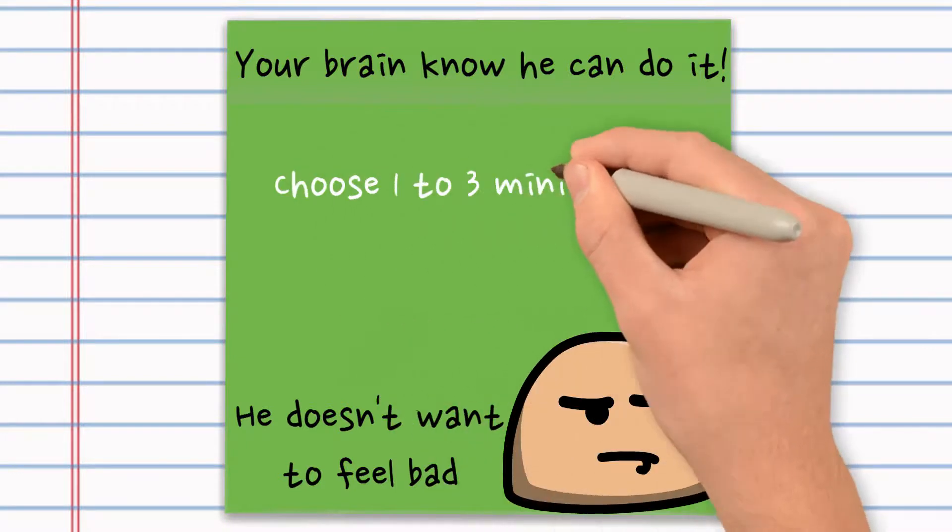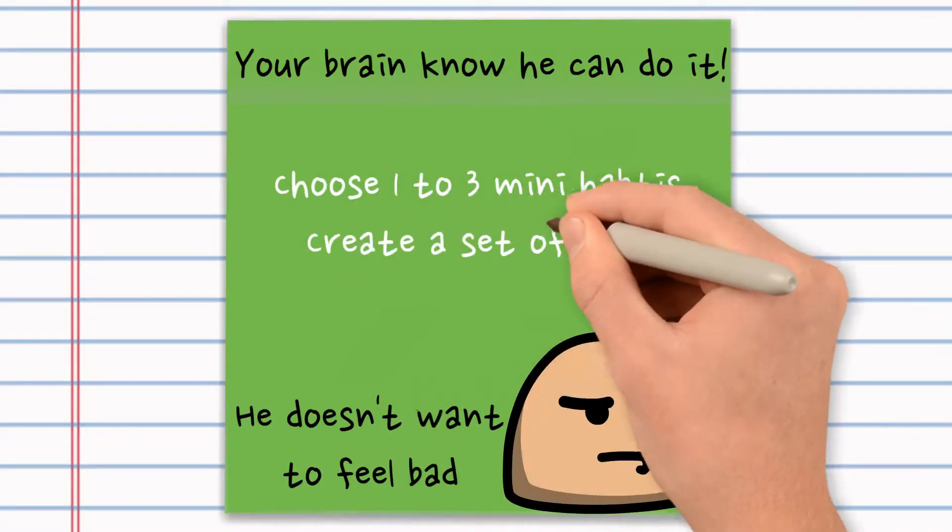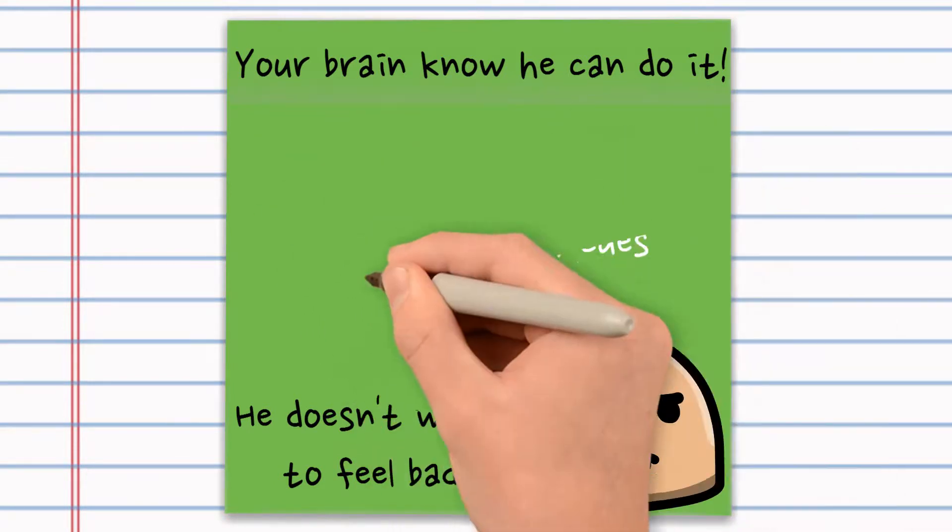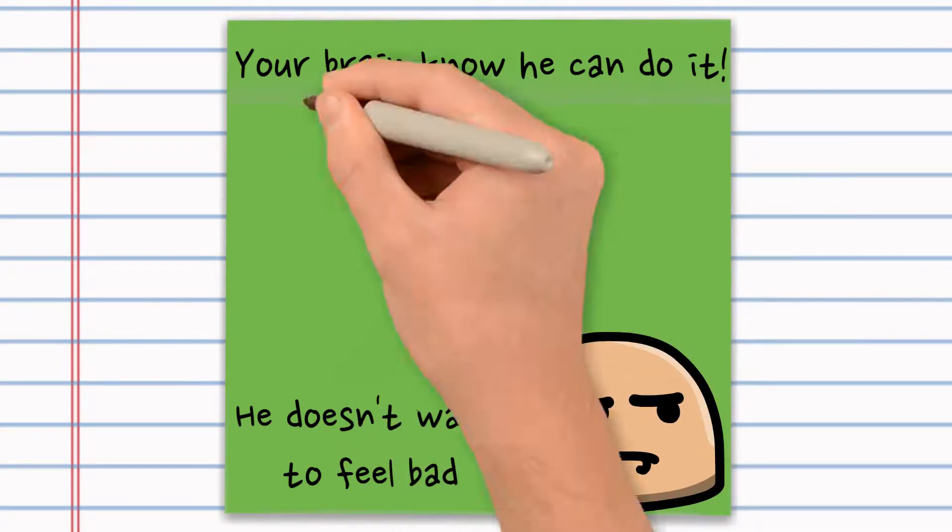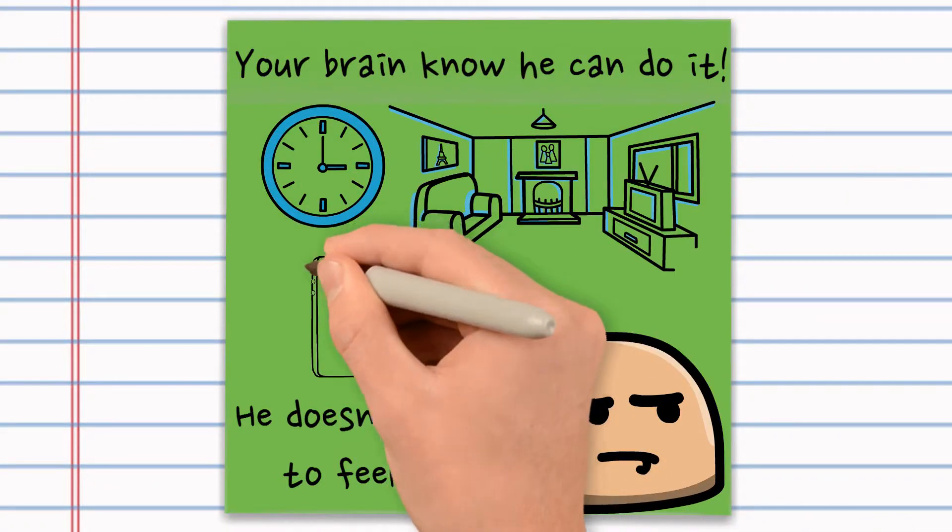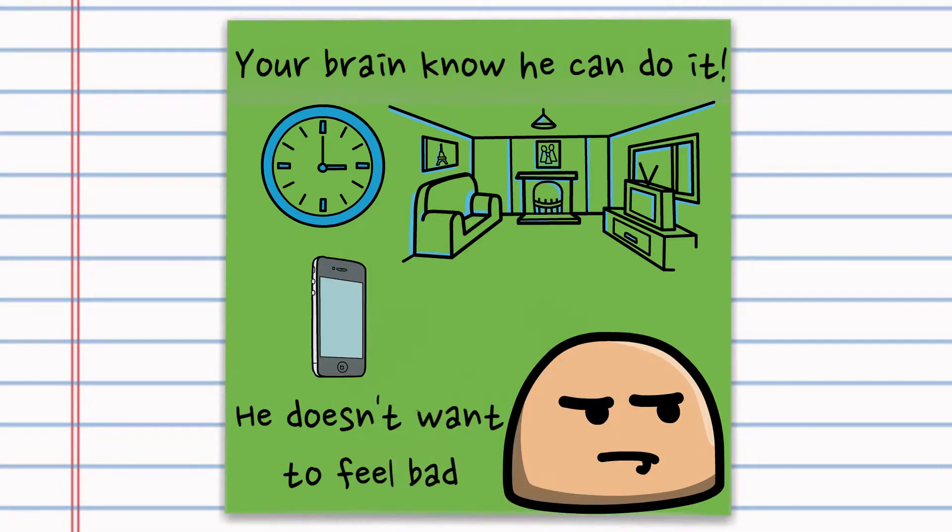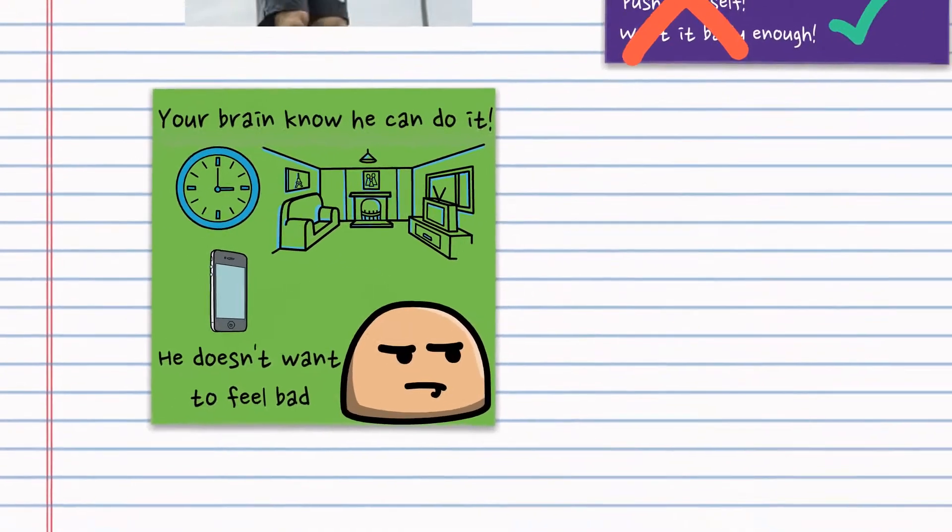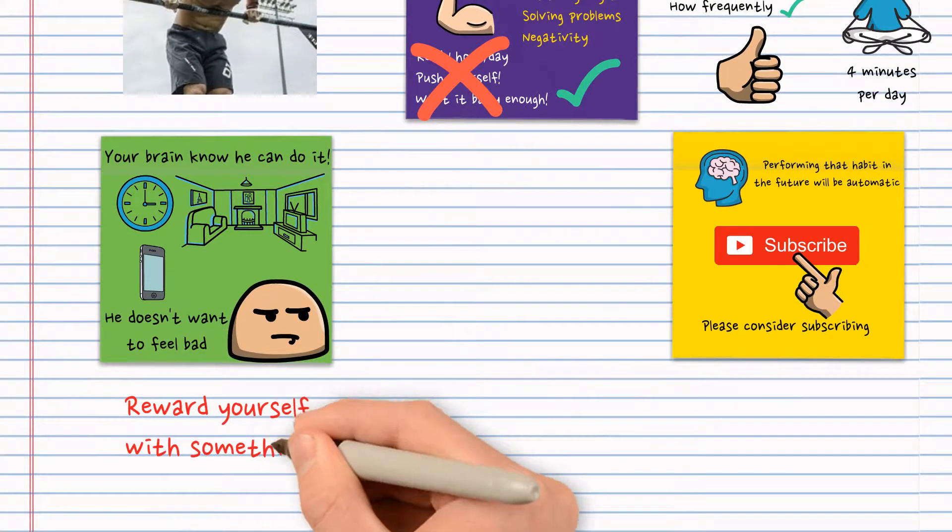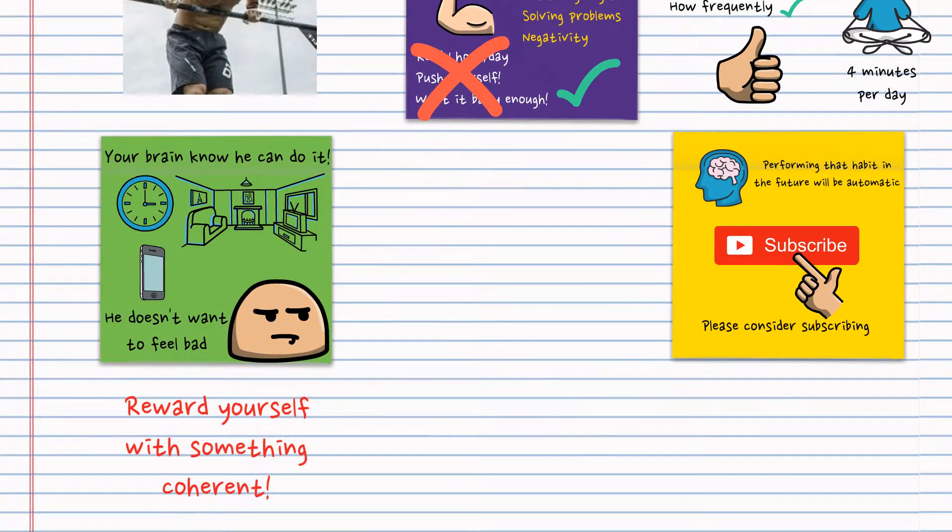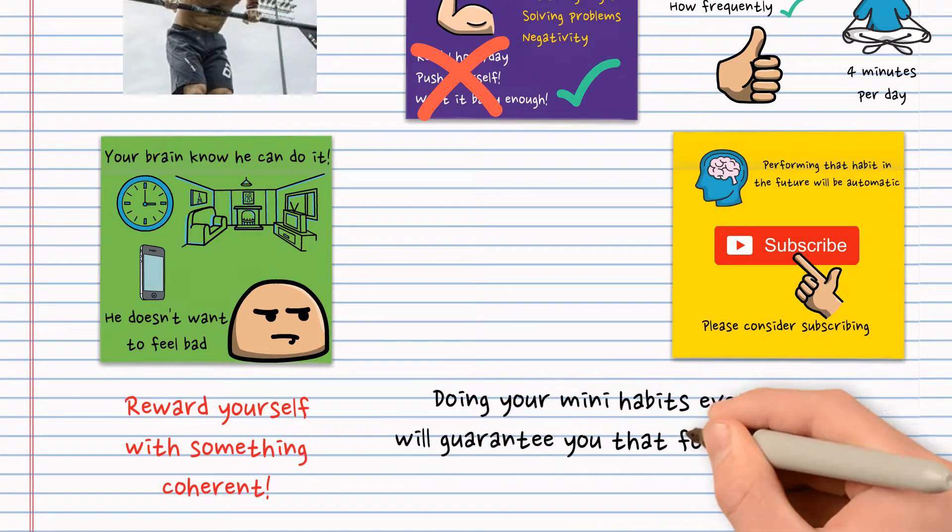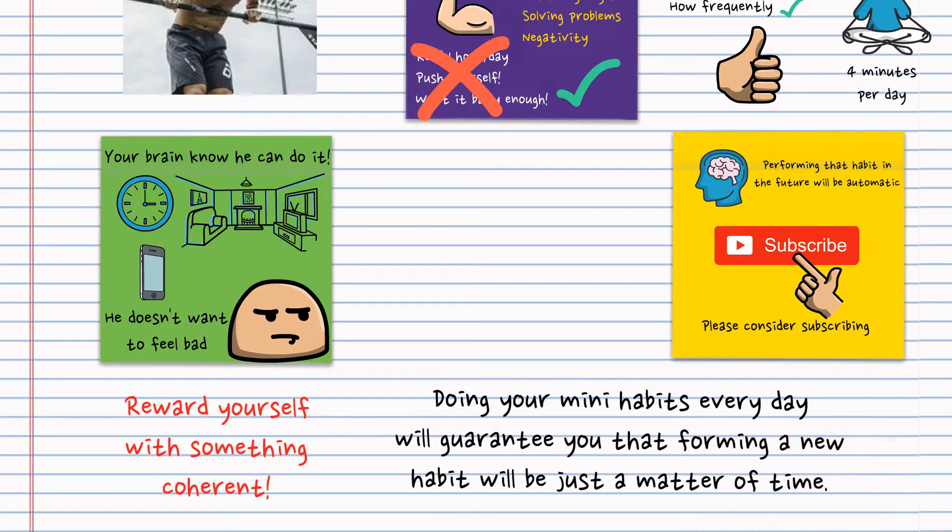I suggest you choose one to three mini habits that you want to build. Create a set of cues that will trigger you to perform your habit. You can pick from setting a particular time, to organizing your environment, or to set a reminder on your phone, whatever works for you. It is very important to reward yourself after you complete your mini habits with something that you like and that reinforces your self-improvement journey. Doing your mini habits every day will guarantee you that forming a new habit will be just a matter of time.